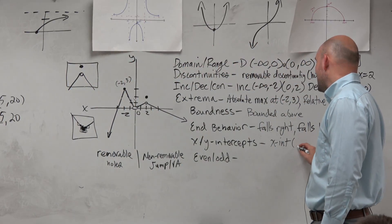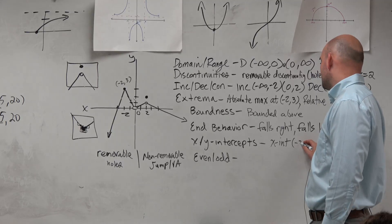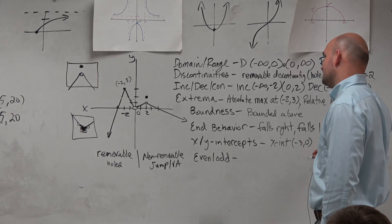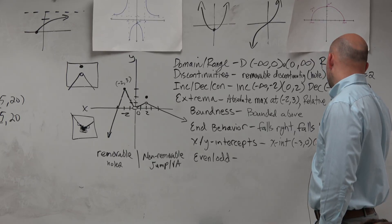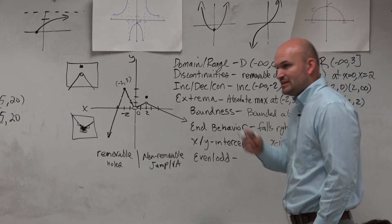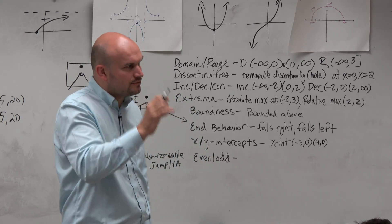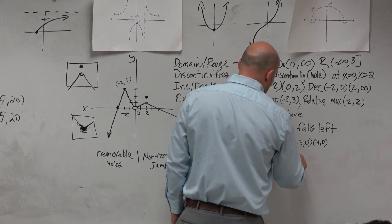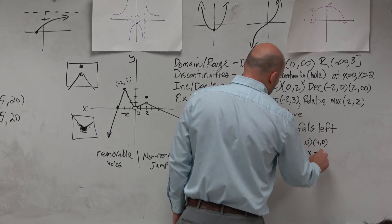So I prefer to write my x-intercepts as coordinate points. And what that does is that reiterates with me that the x value where the graph crosses and y is equal to 0. You could also just write them as x equals negative 3, x equals 4. That's fine.